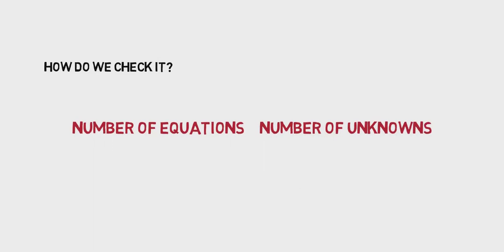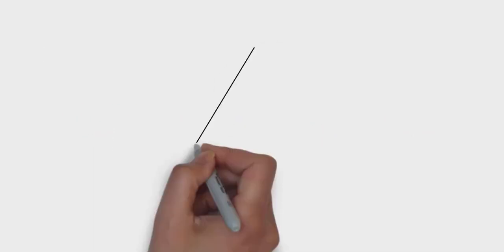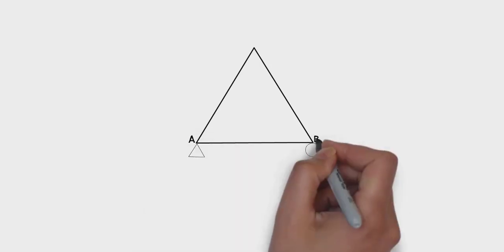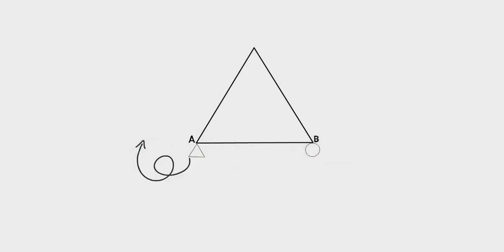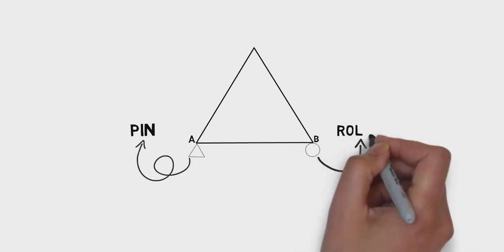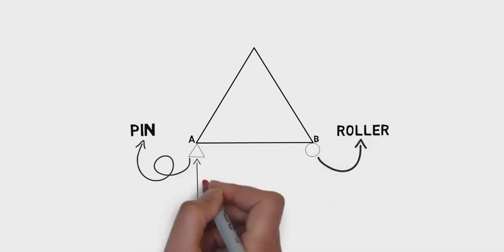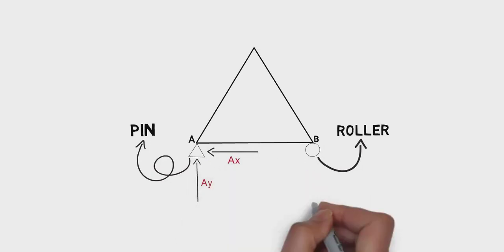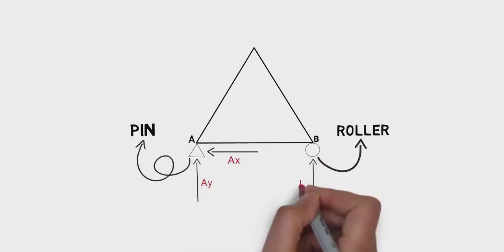Let us try to count the unknowns first. We know that we always have reactions for any rigid body in equilibrium. In our case, we have a pin support and roller support, so we have two reactions for pin support, x and y reactions, but for roller support we have only y reaction. Total of three reaction unknowns.